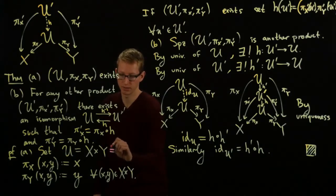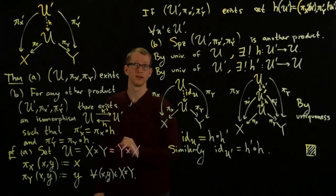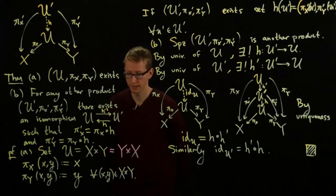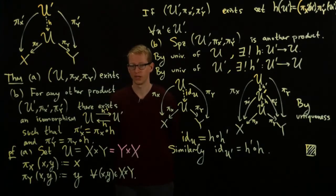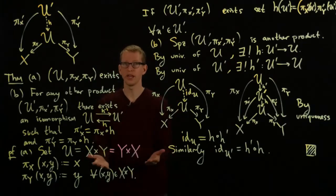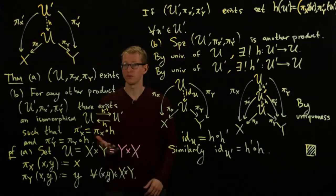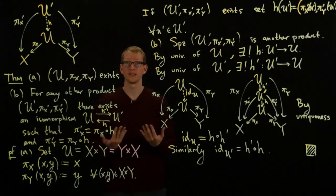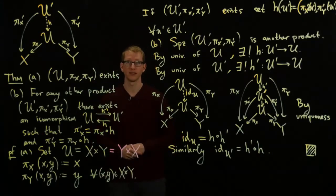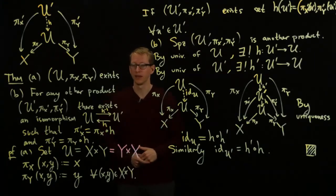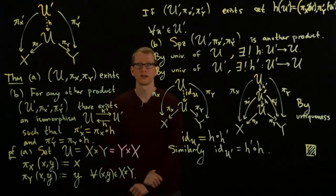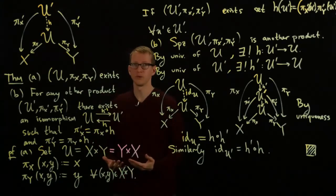and then just have the maps go the other way. That should also be called the product and it is but you can also do other different changes that in no way, shape or form, change what it means to be a product. And that's why this universality condition is so important because what you might call the product somebody else calls the product and it might look a little bit different but it satisfies all the same properties and you would like to say that your two things are in some sense the same and this is the sense in which they are the same.